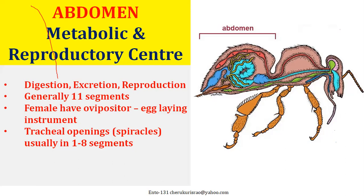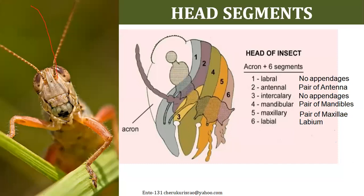Now let us look at the details of the head — the first tagmata, a capsule kind of structure which is a fusion of six segments. The six segments are: the labral segment (labrum is the upper lip), the antennal segment, the intercalary segment, the mandibular segment, the maxillary segment, and the labial segment. You need to remember these six segments.